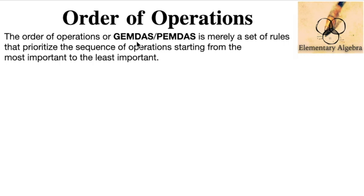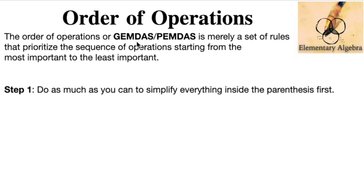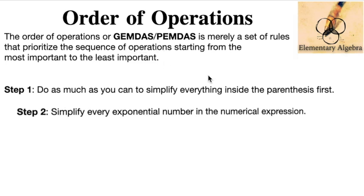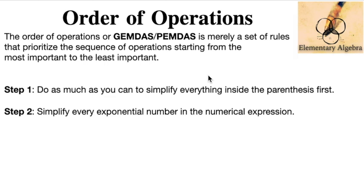This is a set of rules that prioritizes the sequence of operations starting from the most important to the least important. Step number one, do as much as you can to simplify everything inside the parentheses first, or the groupings first. Step number two, simplify every exponential number in the numerical expression.